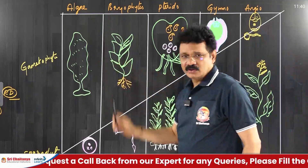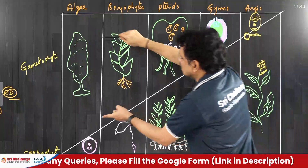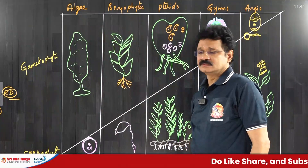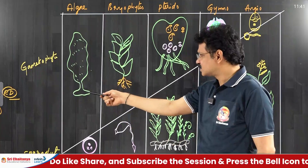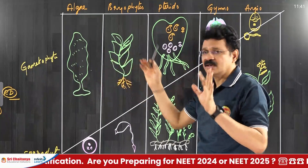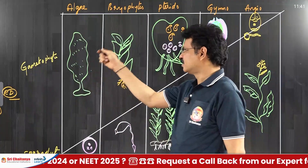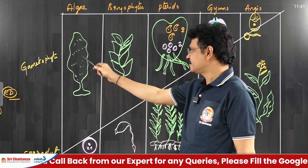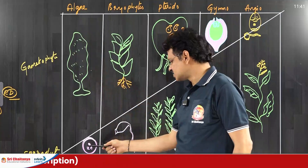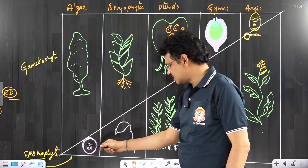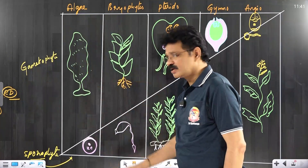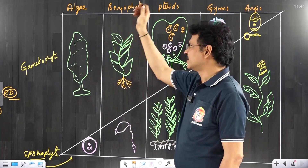In the course of evolution from algae to angiosperms, gametophytes gradually reduce. In algae, the gametophyte is well elaborated. Especially in some brown algae, the largest gametophyte — kelp — is differentiable into holdfast, stipe, and frond. When compared to gametophytes, the sporophyte in algae is minimized to a single cell — the zygote only. There are no other cells in the sporophyte generation. So the sporophyte is highly reduced, but the gametophyte is photosynthetic, independent, and dominant in algae.